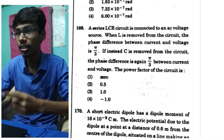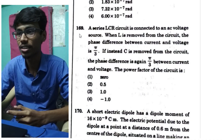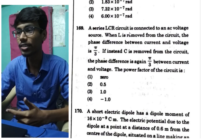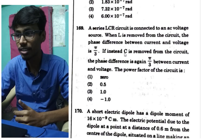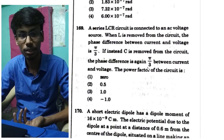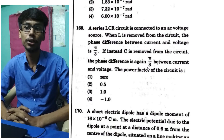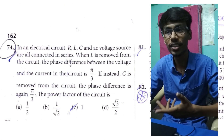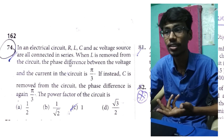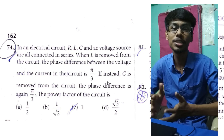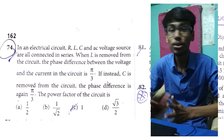This is the NEET 2020 paper. There is a physics question — 169th question. There is also a paper code. Here is a question: A series LCR circuit is connected to an AC voltage source. When L is removed, the phase difference between the current and voltage is π/3. When C is removed, the phase difference between the current and voltage is also π/3. Find the power factor of the circuit.